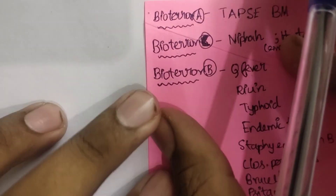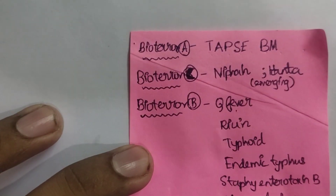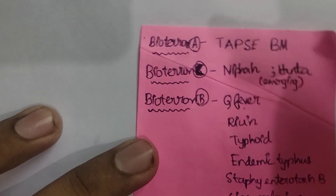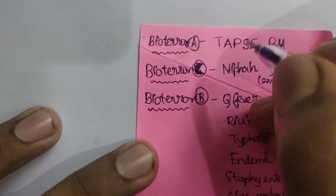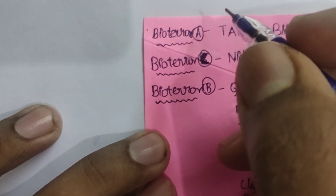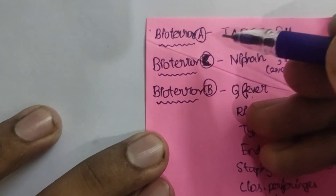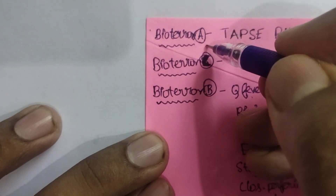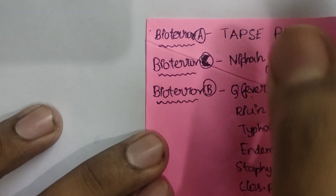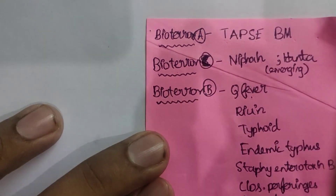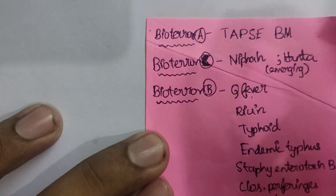Welcome back guys. In this video we can see about the most high-yielding stuff in microbiology, that is bioterrorism agents and their categories. These bioterrorism agents have been classified under three categories: A, B, and C. Category A includes the agents which are easily spreadable and easily transmissible from person to person, thereby resulting in high death rates.